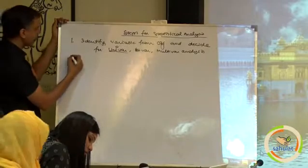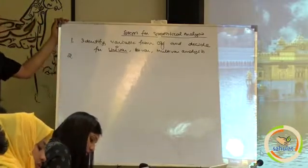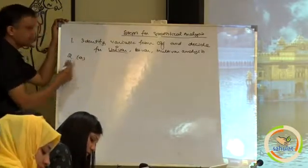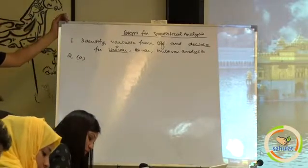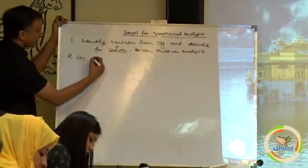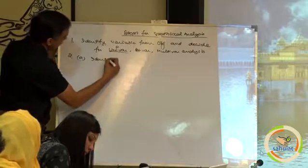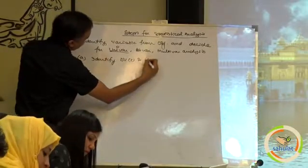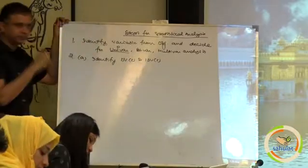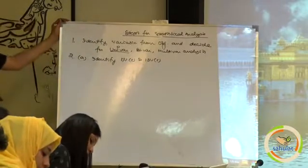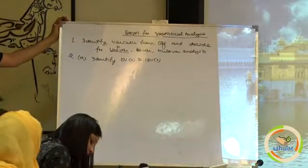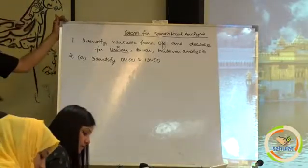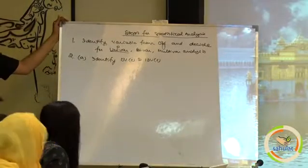If bivariate or higher, we will go ahead. Step number 2 contains 3-4 parts. The first part is: identify the DVs (dependent variables) and IDVs (independent variables). I have used the plural form in case there is more than one dependent variable.